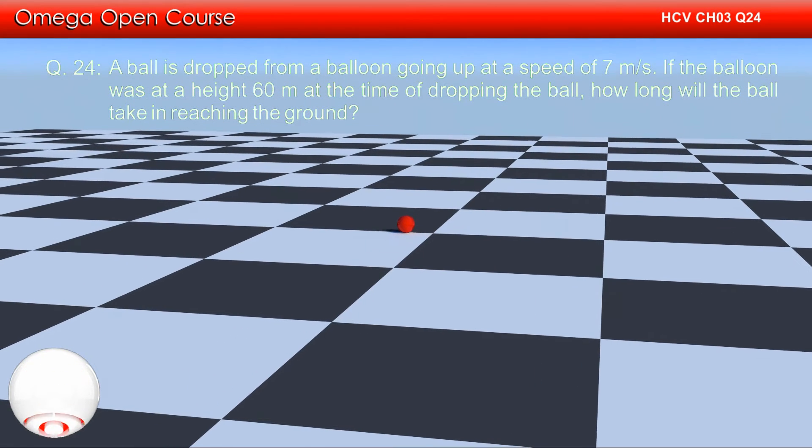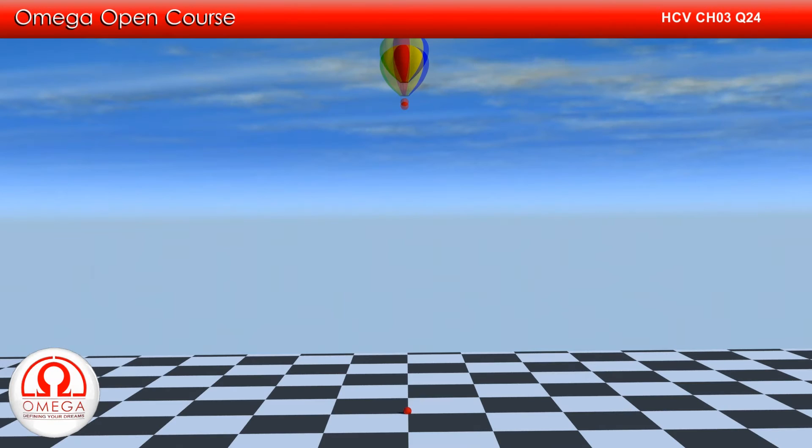Let us take the upward direction to be positive. As the ball is dropped from the balloon, its initial speed with respect to the balloon is zero, but the balloon is moving upward with 7 meters per second. Therefore, the initial speed of the ball must be equal to 7 meters per second with respect to the ground.